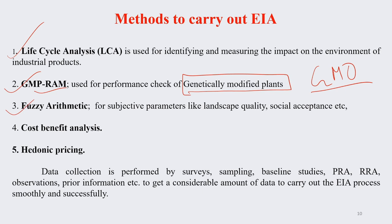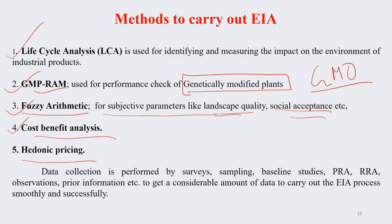Fuzzy arithmetic is a method for subjective parameters like landscape quality and social acceptance — meaning whether a project is socially accepted by the people residing there. Cost-benefit analysis: how much you are going to spend and how much you are going to earn, including ecological cost-benefit, needs to be analyzed. Hedonic pricing also helps to find out the impact of a project on the environment. The data collection in EIA is largely performed by surveys, sampling, baseline studies, and PRA and RRA — participatory rural appraisal and rapid rural appraisal, which we discussed in great detail in a previous lecture.